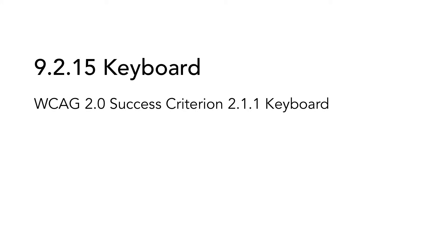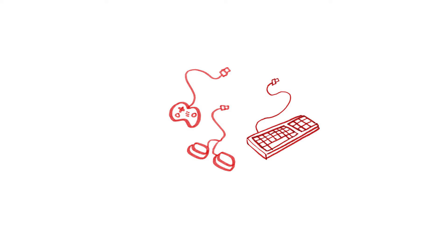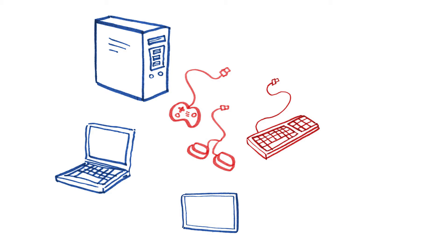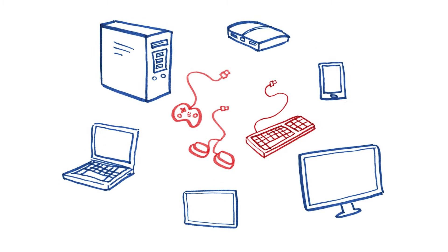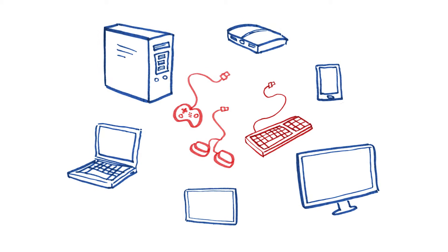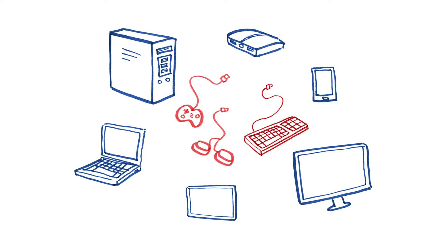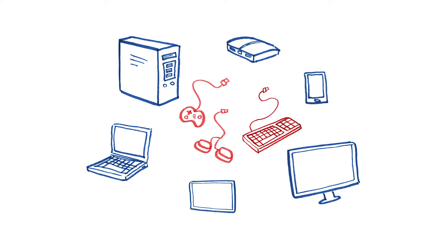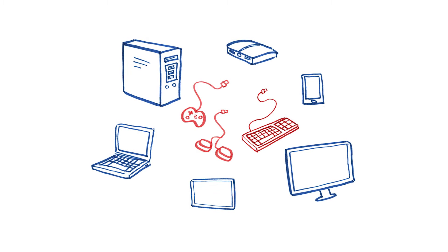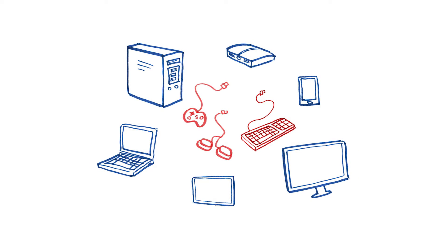9.2.15 Keyboard is based on WCAG 2.0 Success Criterion 2.1.1 Keyboard. The user should be able to interact with the interface in his or her preferred way. Some users cannot use a mouse and therefore use different kinds of assistive technology to interact with the interface. Other users need to use a keyboard, virtual or physical. This can for example be users with motor impairments, blind users or users that provide input with a voice. This success criterion is aimed to make sure that it's possible to use the keyboard to navigate.